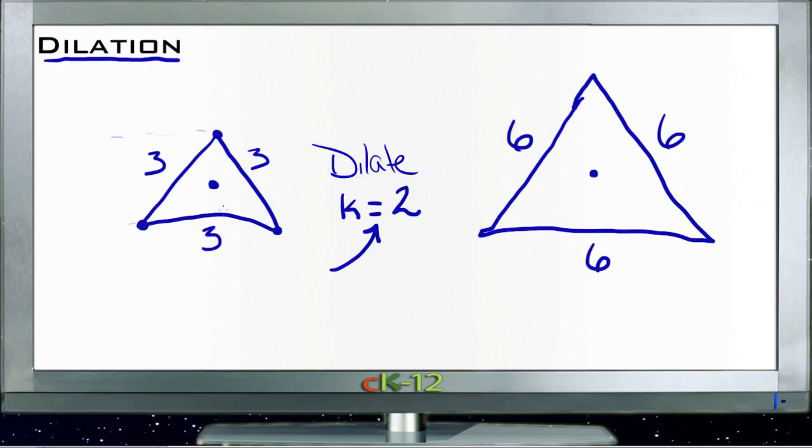So whatever this distance is here, I double it to get to the new one, and I take this distance here and double it to get to the new one, and so forth, so that I end up with my new figure which is twice the size in each dimension.